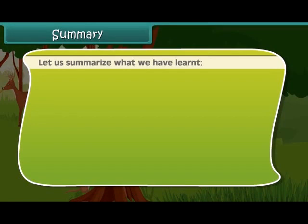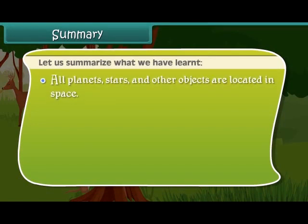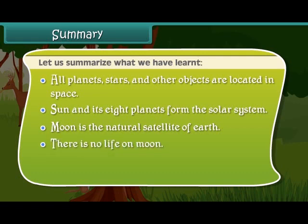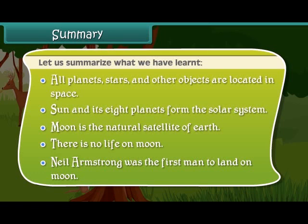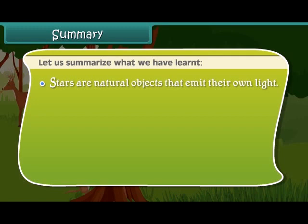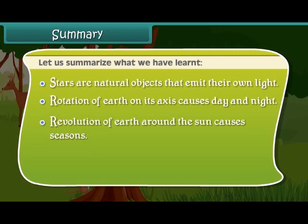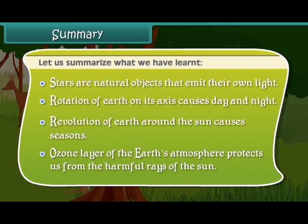Summary: All planets, stars, and other objects are located in space. The sun and its eight planets form the solar system. Moon is the natural satellite of Earth. There is no life on the moon. Neil Armstrong was the first man to land on the moon. Stars are natural objects that emit their own light. Rotation of Earth on its axis causes day and night. Revolution of Earth around the sun causes seasons. The ozone layer of Earth's atmosphere protects us from the harmful rays of the sun.